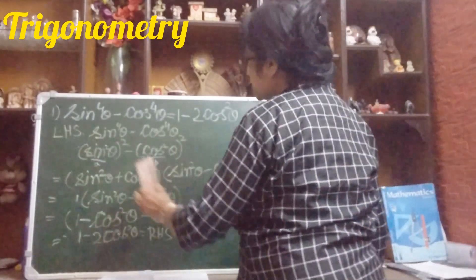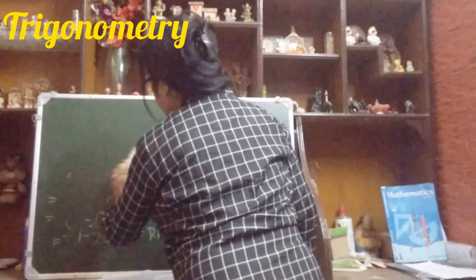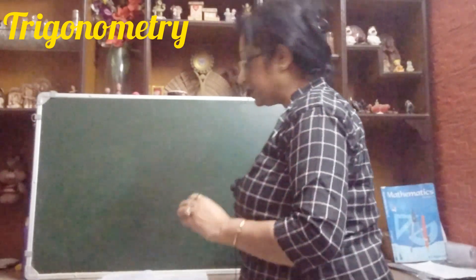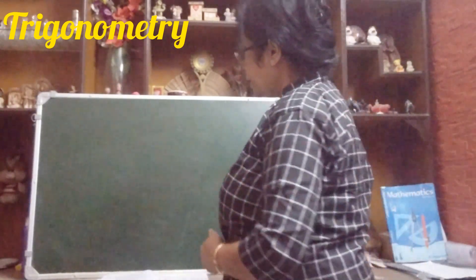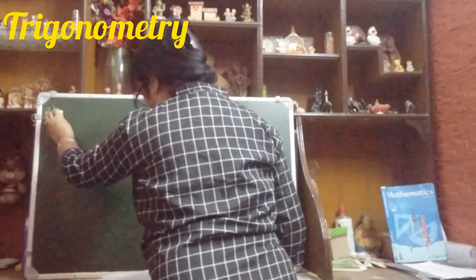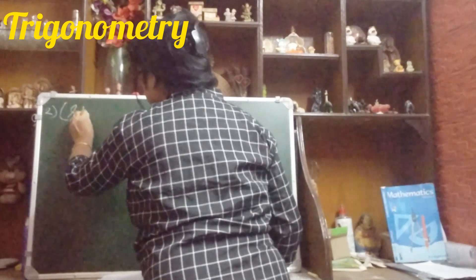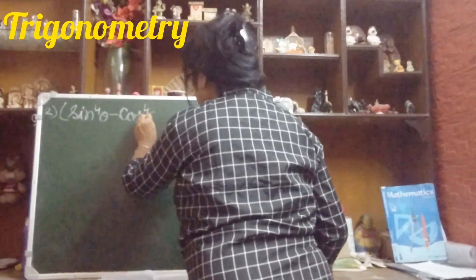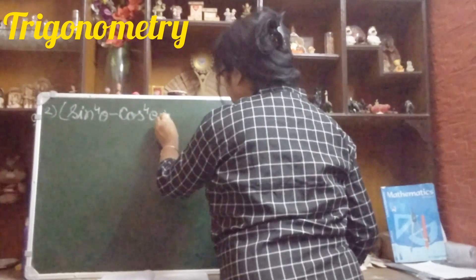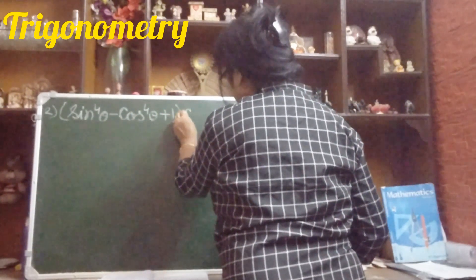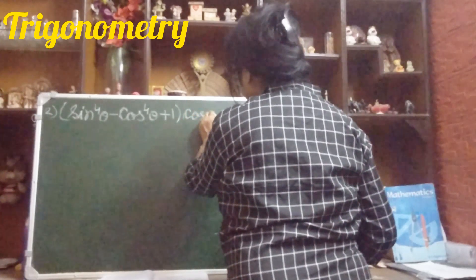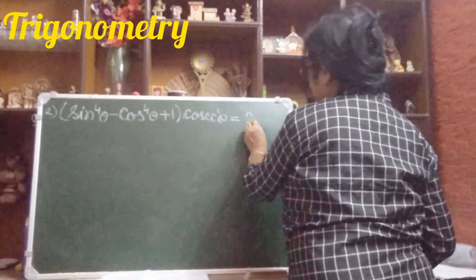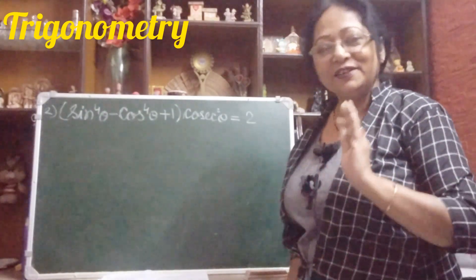Let us do one more sum. This sum came in the board exam 2019. It is a similar type, that is why I picked it up. The sum is: (sin⁴θ − cos⁴θ + 1)·cosec²θ, and you have to prove this equals 2. Don't worry, we will do it.